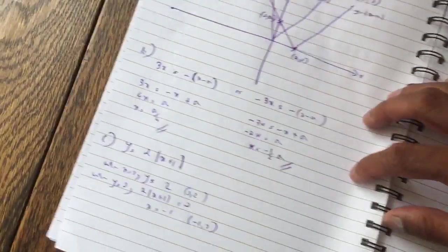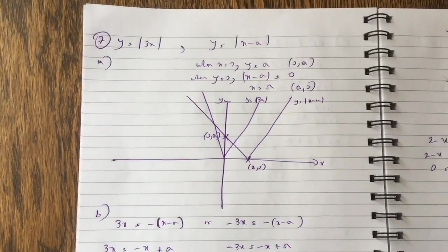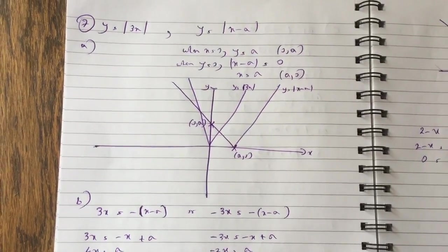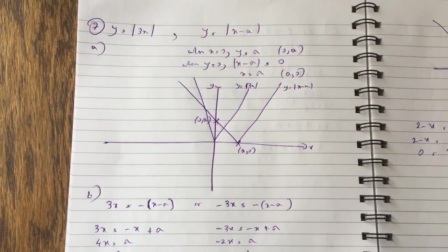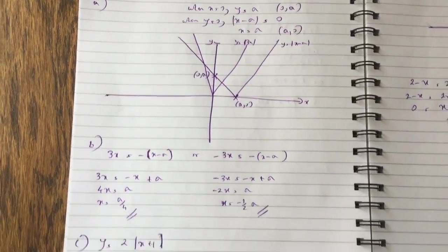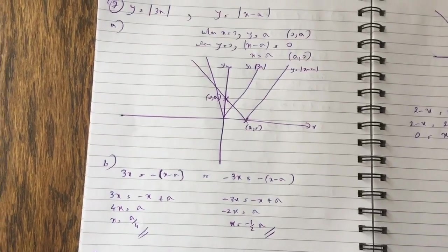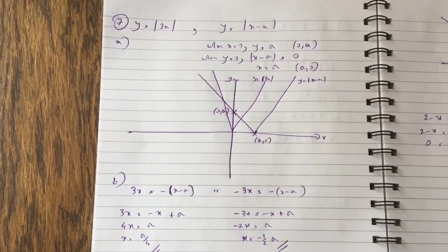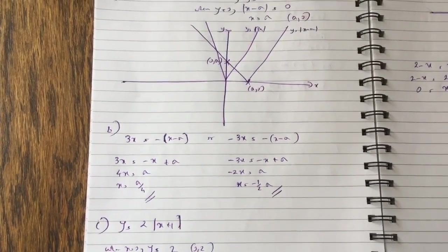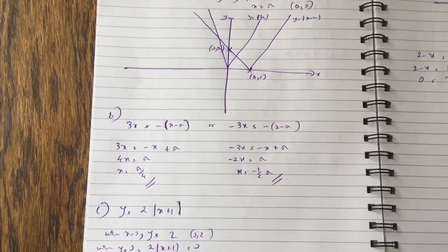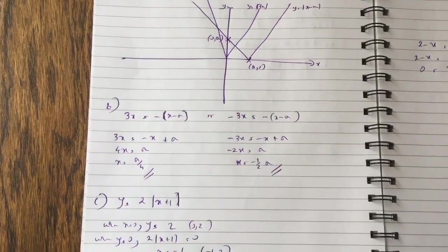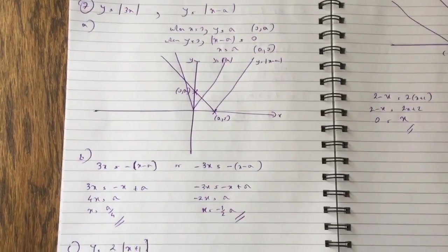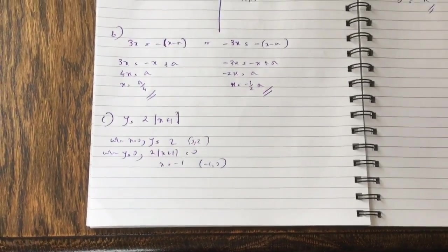Now the last question — the modulus question. y = |3x| and y = |x − a|. You sketch the graphs; the negative section of |x − a| crosses both parts of |3x|. So solve 3x = −(x − a) and −3x = −(x − a), giving x = a/4 and x = −a/2. It's always good to look at the graph to see which sections are intersecting.